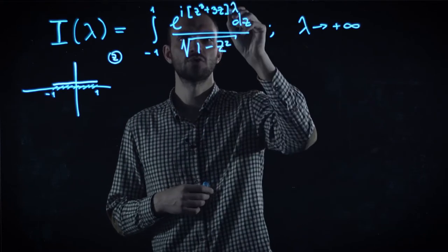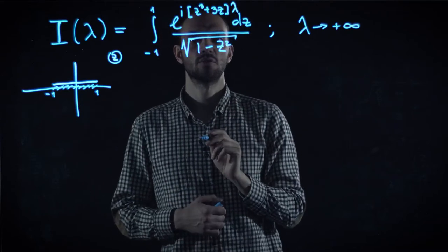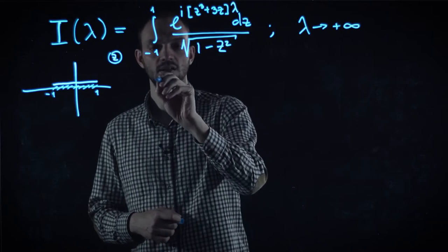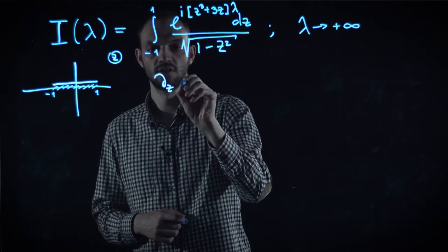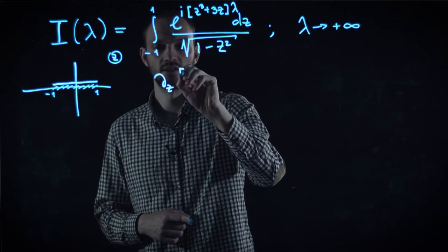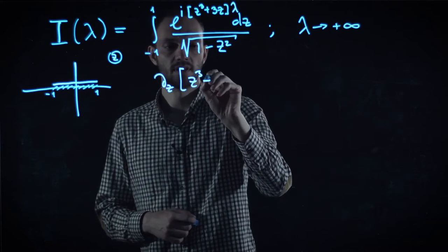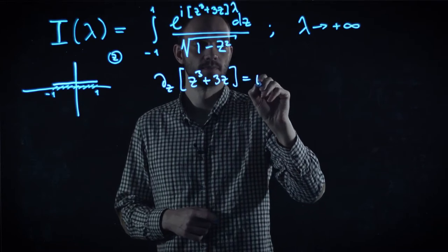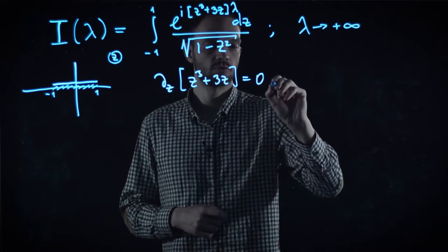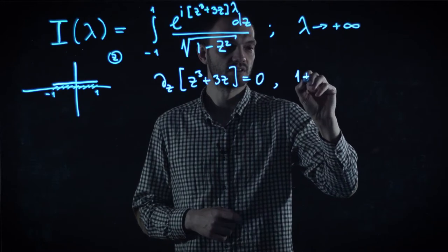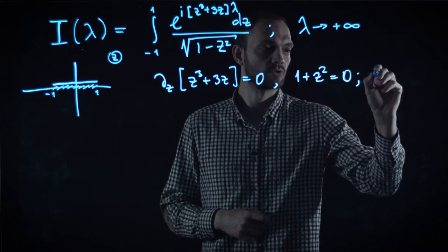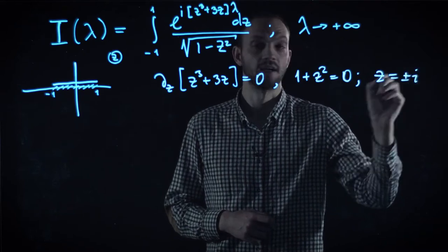And they are defined, as usual, by the stationary points of the prefactor of the large parameter in the exponent. So, we need to solve the following equation: d over dz of z cube plus 3z equal to 0. And the equation is nothing but 1 plus z squared equal to 0. And it has two solutions: z equal to plus or minus i.